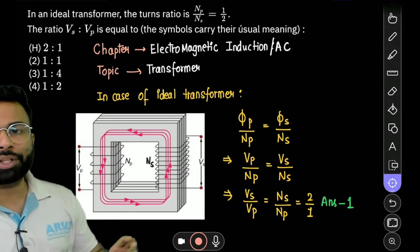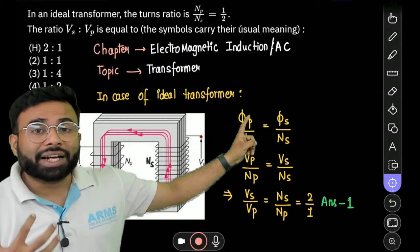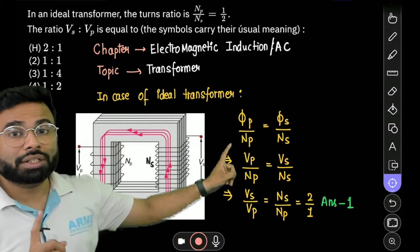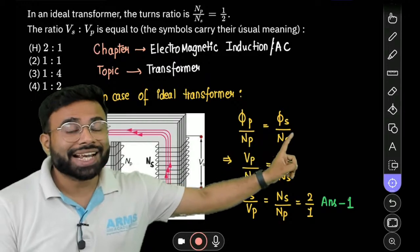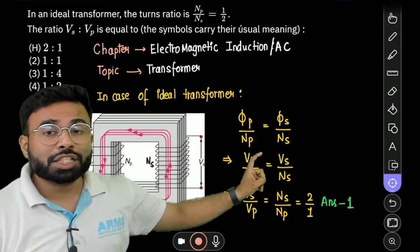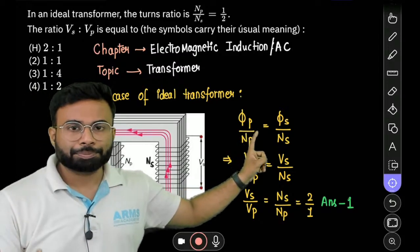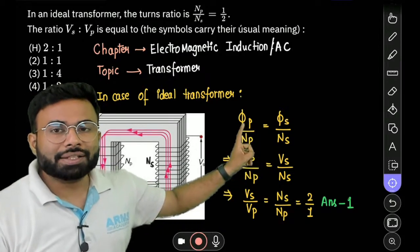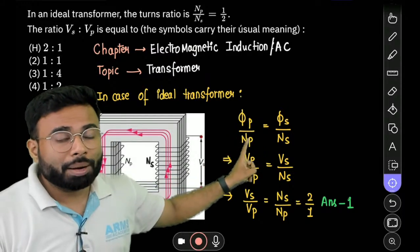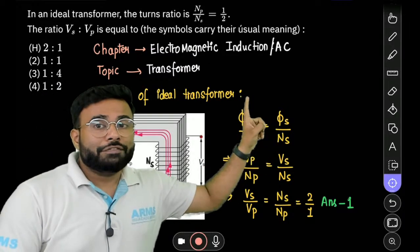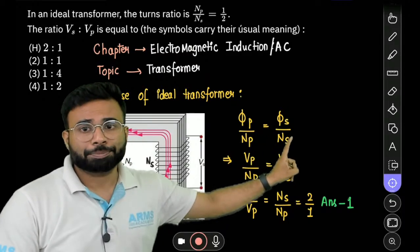And what is the core concept here? The total magnetic flux or total magnetic field lines per unit turn. It is the same as primary and secondary. So total magnetic field lines means flux, magnetic flux. So we can say that magnetic flux of primary coil upon number of turns of primary coil must be equal to flux of secondary coil upon number of turns of secondary coil.